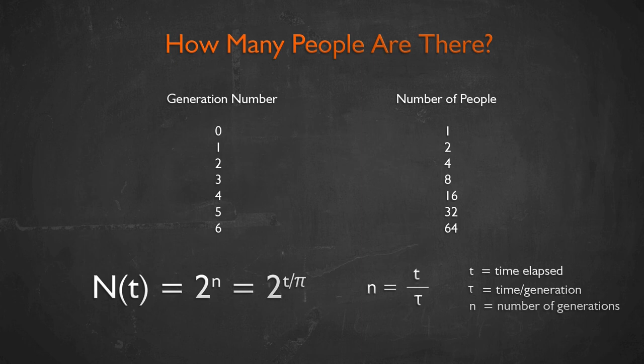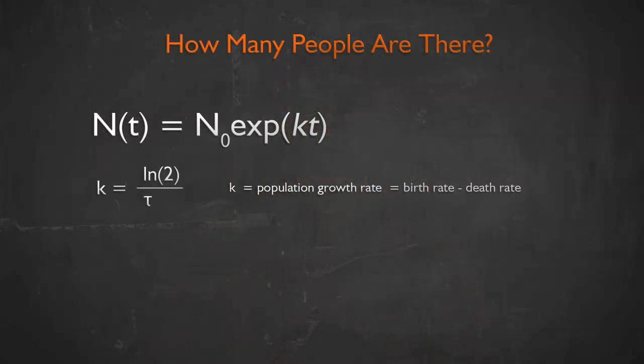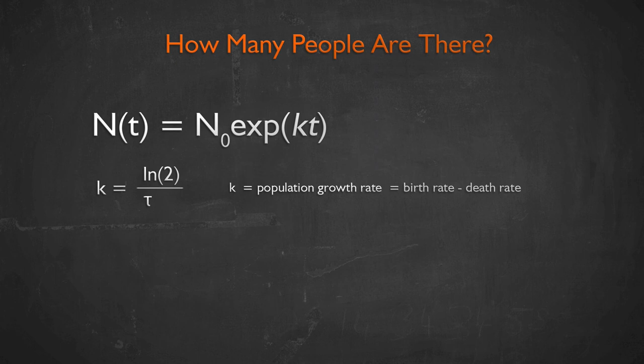Why is this called exponential growth? Mathematicians like to rewrite this formula as N(t) = e^(kt), where e is the exponential function and k is the exponential growth rate. k can be related to the previous formula: it's simply ln(2) divided by τ. This is just a way to rewrite the formula, and it gives the name exponential growth.